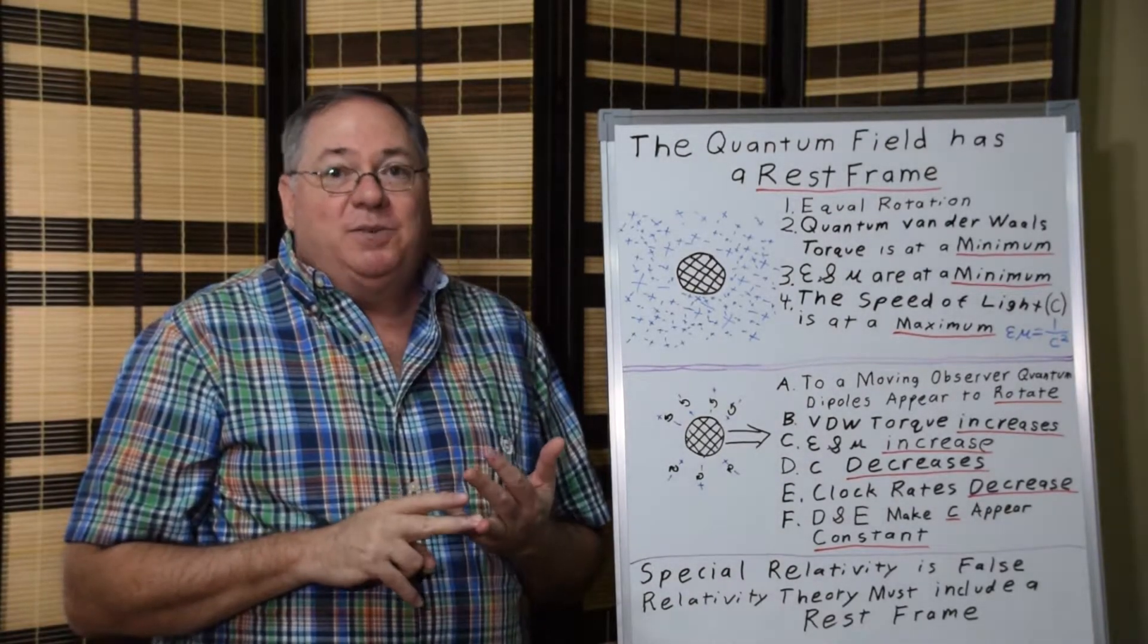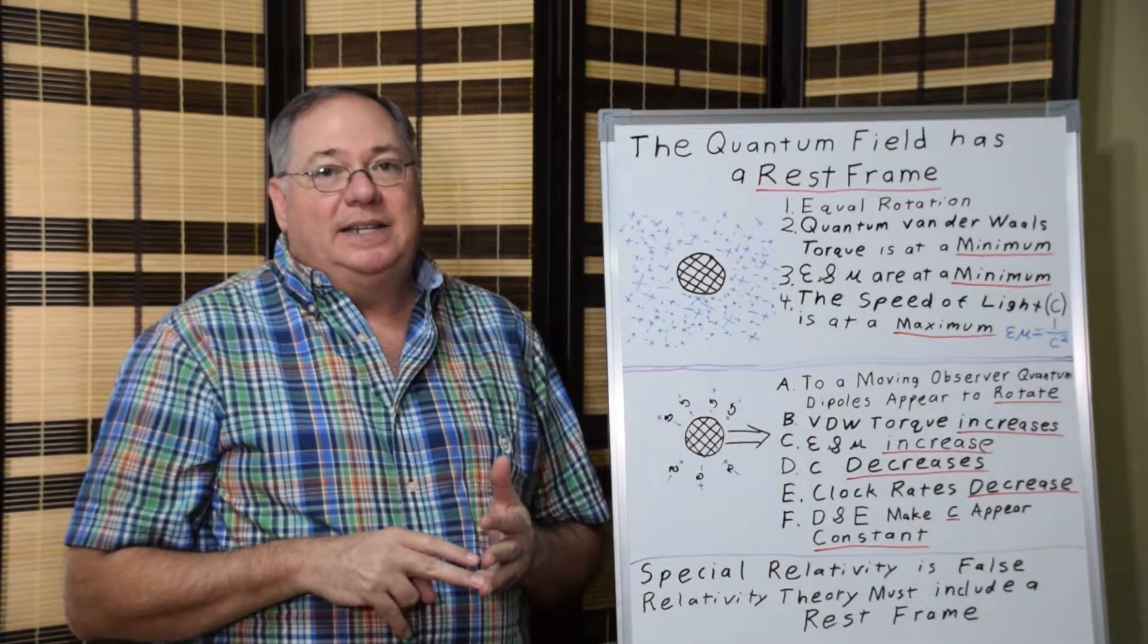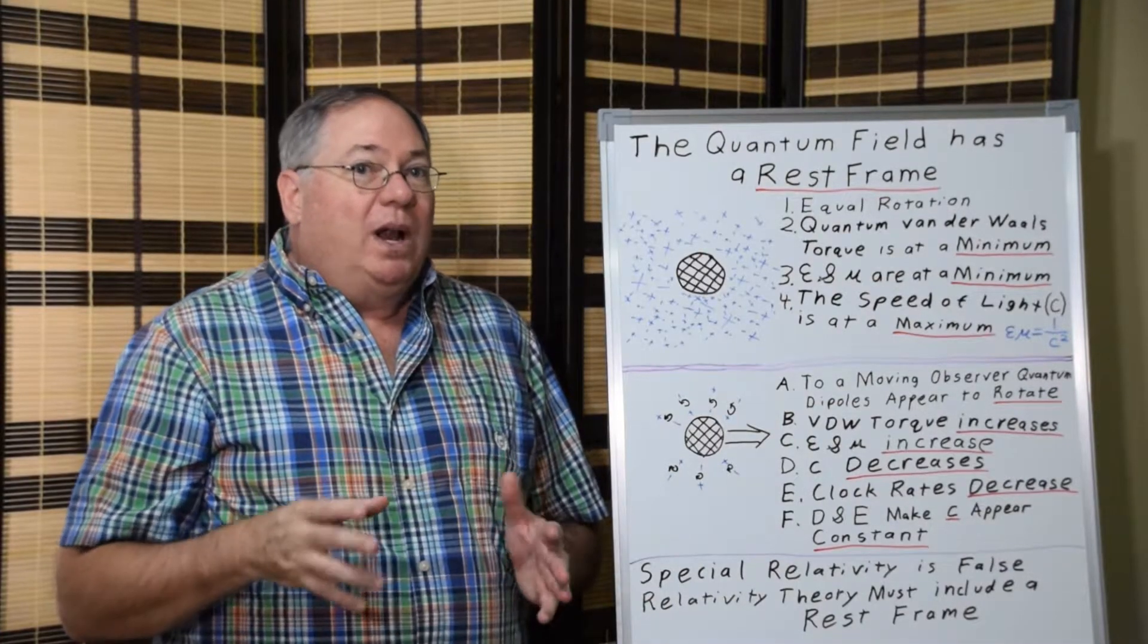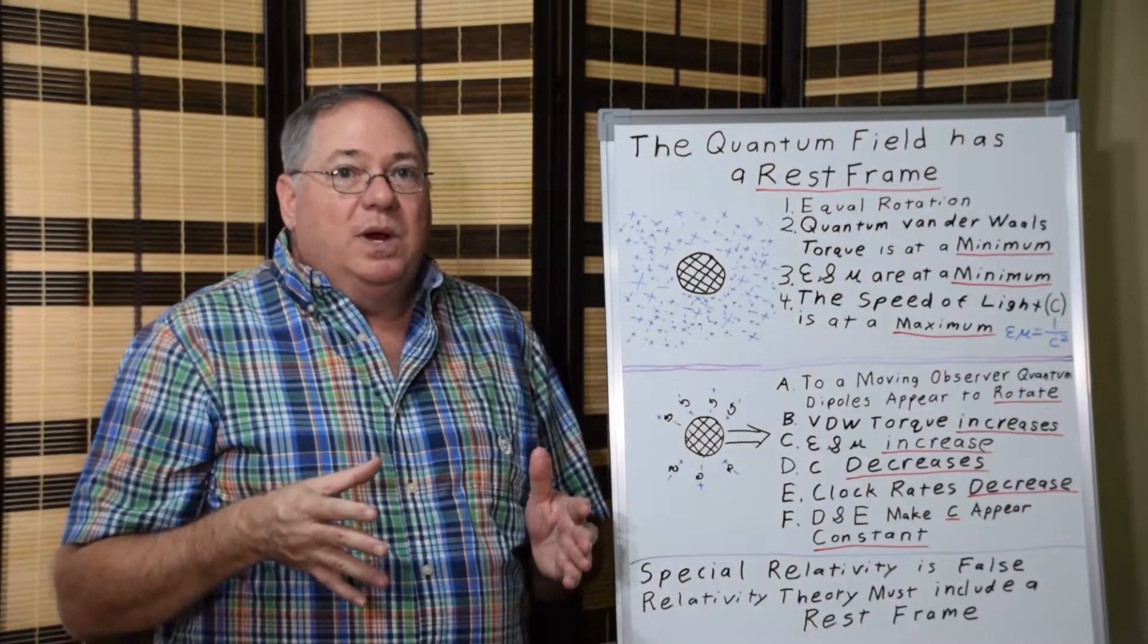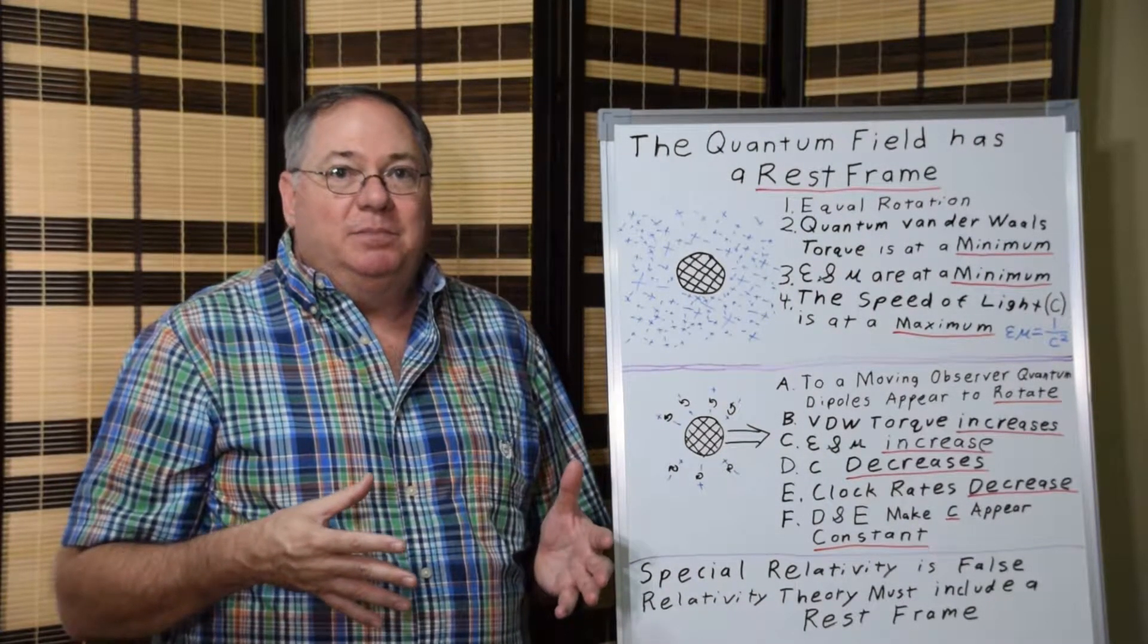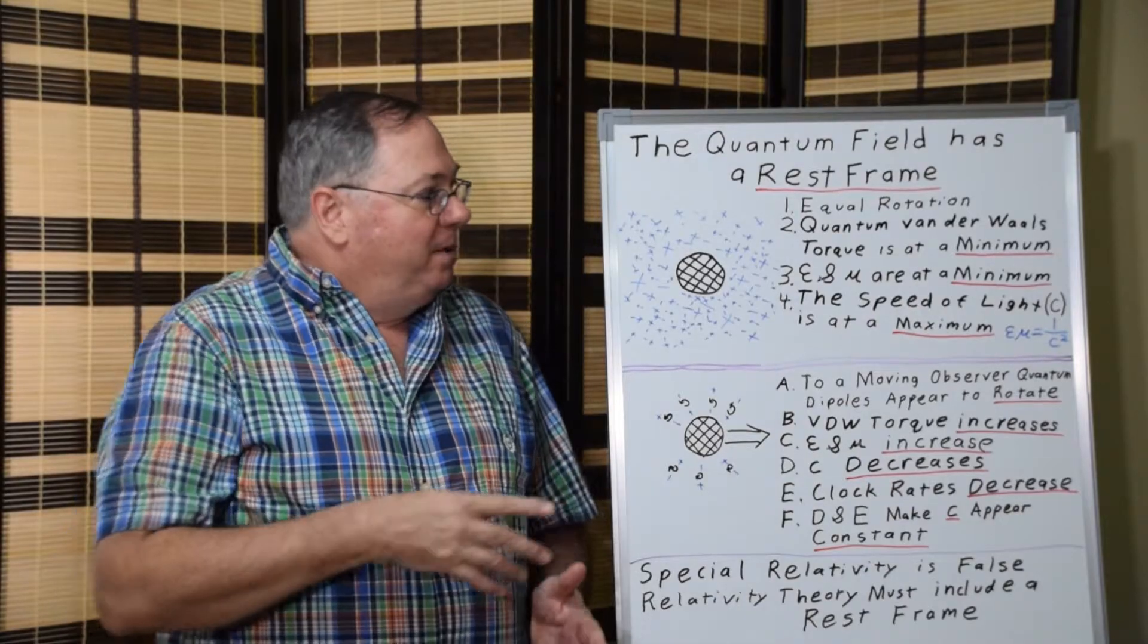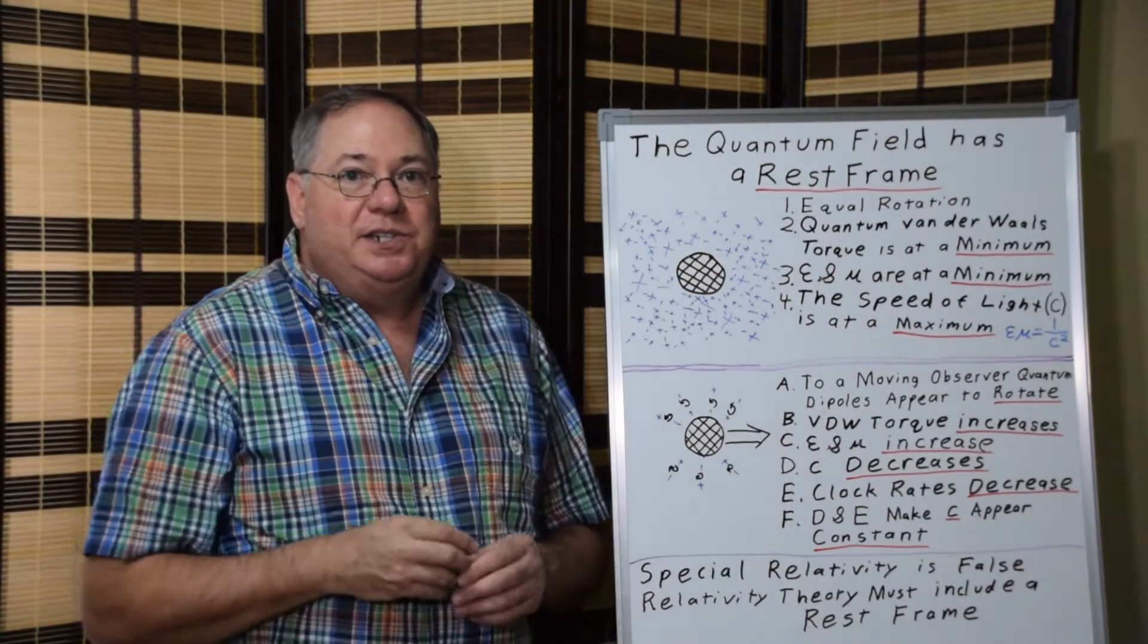Maxwell realized in the 1860s that the quantum field, or the ether rest frame as he knew it, was where the speed of light had its maximum speed, because he was aware of this relationship.